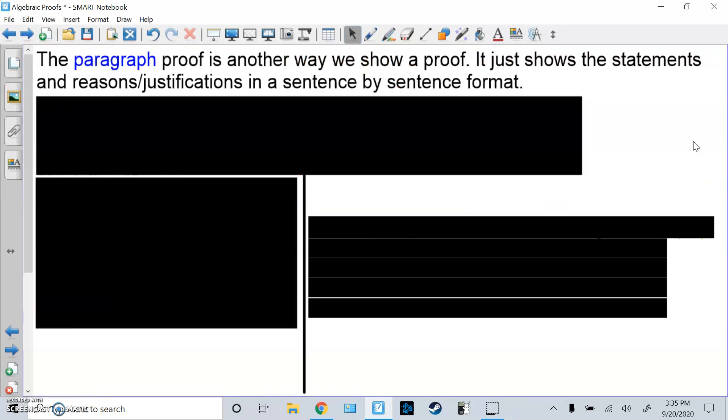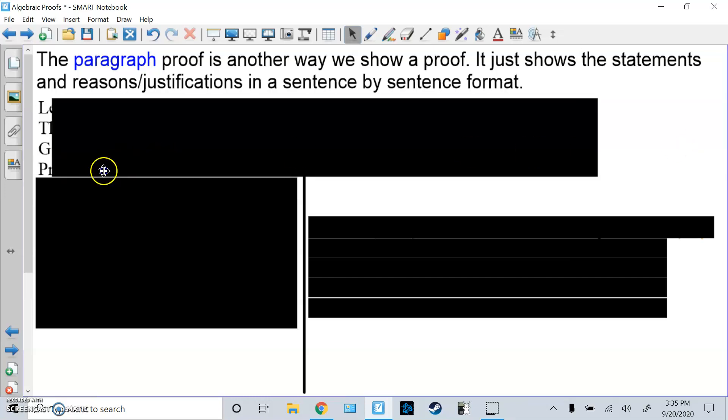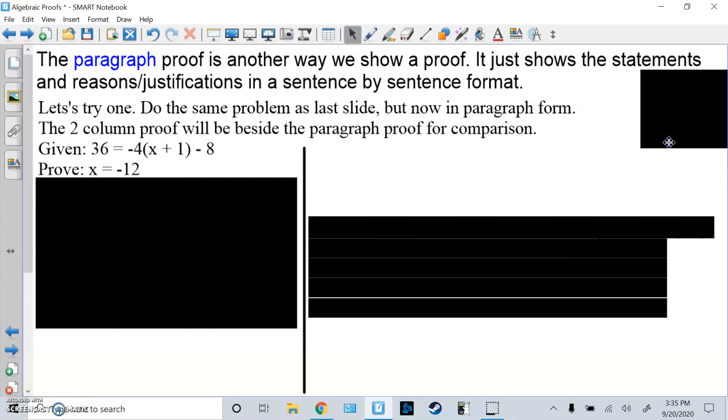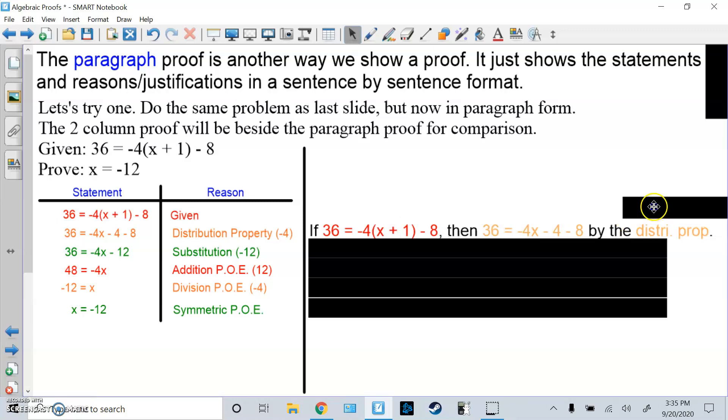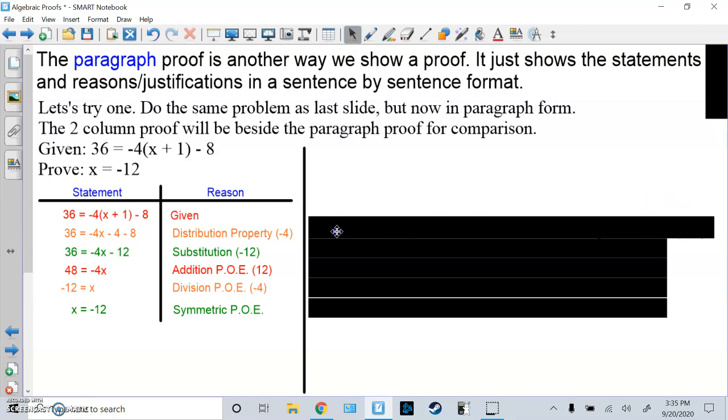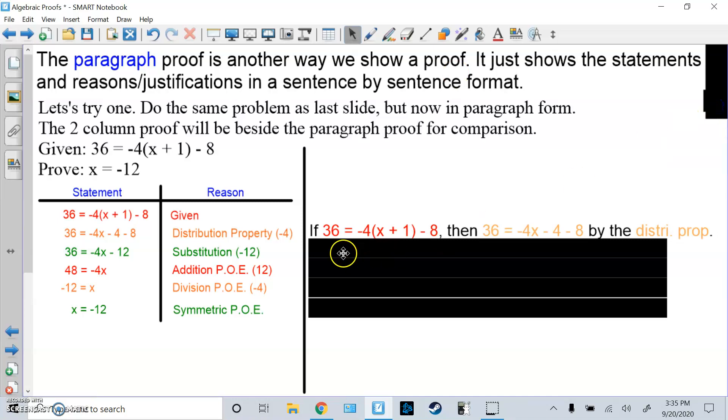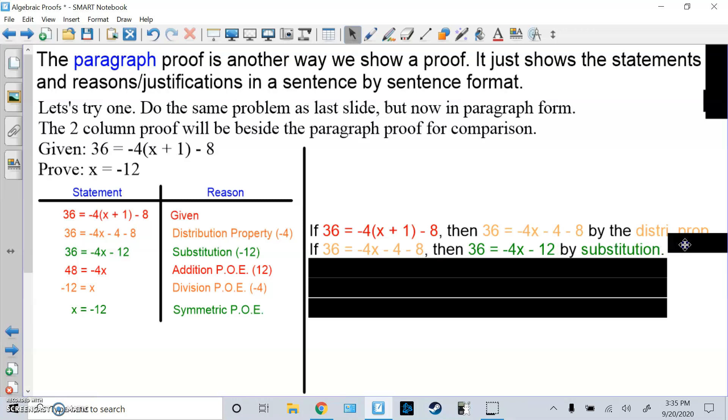The paragraph proof is another way we show a proof. It shows the statement and reason or justifications in a sentence by sentence format. So we're going to do the exact same problem as before but put in paragraph form. And actually I'm going to use the same answer from before just to show you can compare and contrast. So again, given this problem, prove that this is what we had last time. So first we'd say, well, if we have the problem, then we get this by distributive property. So you don't have to write given here. Then from there, if you're at this piece, what do you do next? You combine to get that by substitution.